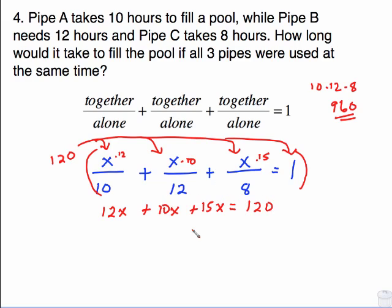So by multiplying by 120, we've made the fractions go away and we have a reasonable equation to solve. Add up these x's is 37x equals 120. Divide both sides by 37. This doesn't come out even, but that's okay. It's approximately 3.2 hours.